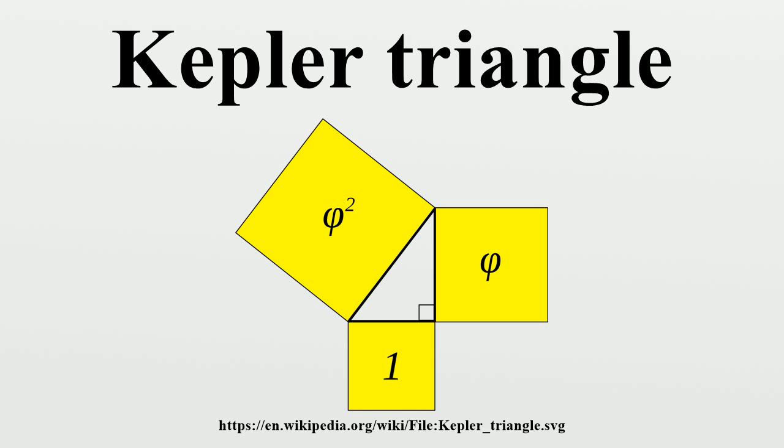Kepler first demonstrated that this triangle is characterized by a ratio between short side and hypotenuse equal to the Golden Ratio.